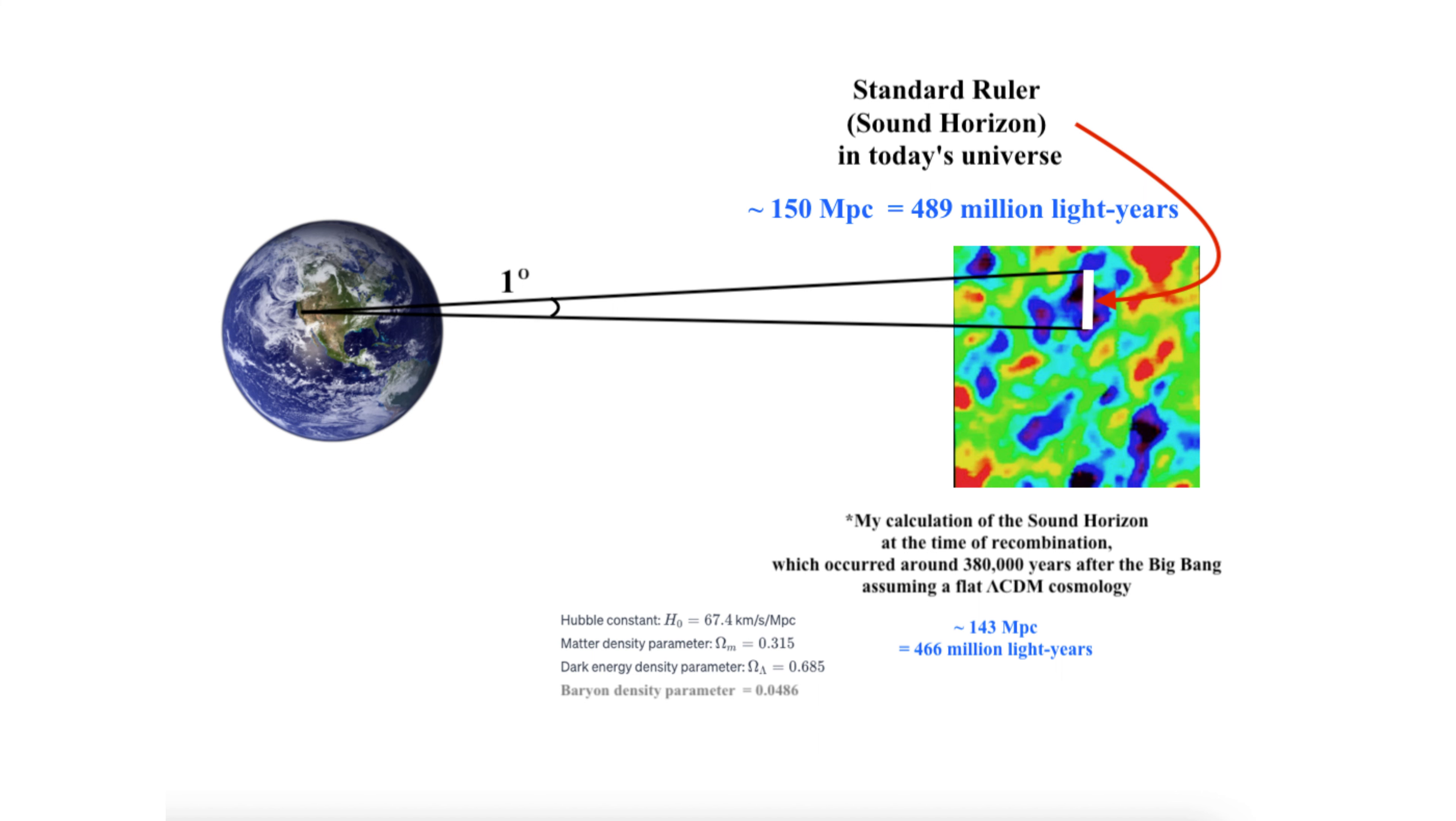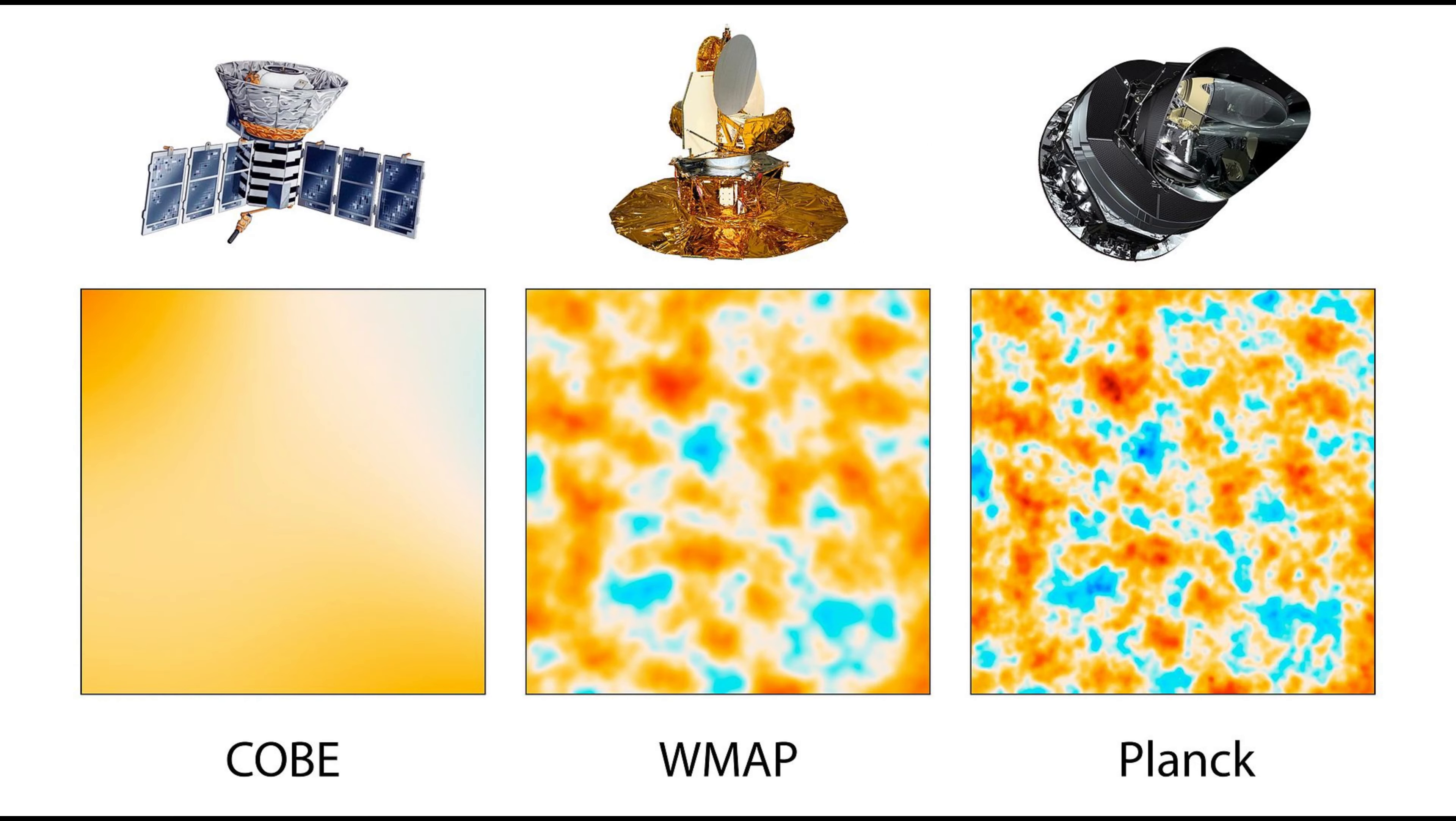Precise measurements by satellites like WMAP and Planck reveal incredibly uniform temperature fluctuations in the CMB, precisely what we would expect in a flat universe. Any curvature in the universe would distort these fluctuations in specific ways, but such distortions hadn't been observed. This uniformity strongly suggests a flat geometry on a grand scale.